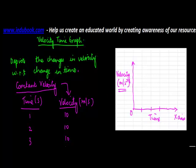If you start plotting this — let's say the time range is one, two, three, four and the velocity axis goes five, ten, fifteen, twenty — when the time is one second, the velocity is 10, so the point lies here. From 10 draw a parallel; at time 2 it is again 10, so point 2 is here.